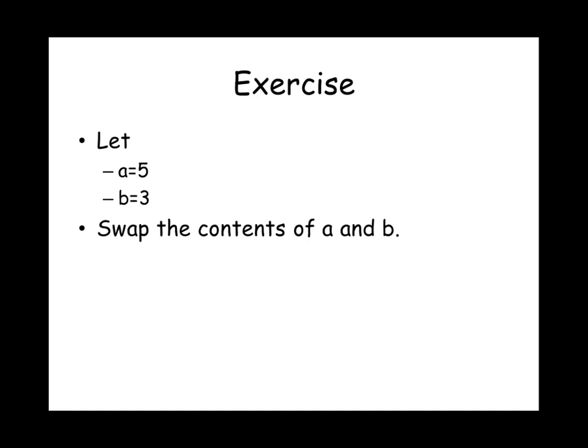Now let's work on an exercise for using variables and assignments. You are given two variables A and B and asked to write code that will swap their contents. In this example, A contains 5 and B contains 3, but your code should work for any values. The incorrect way is to say A equals B and then B equals A, because MATLAB executes code line by line. After the first line, the contents of B override A, so the second line uses the overridden value. To solve this correctly, you need to think about variables as boxes.